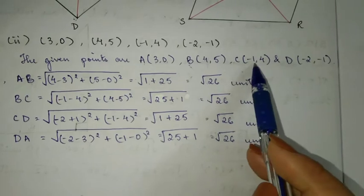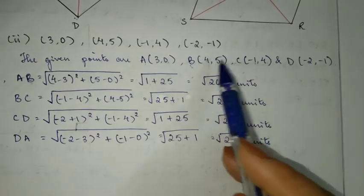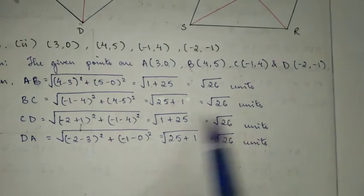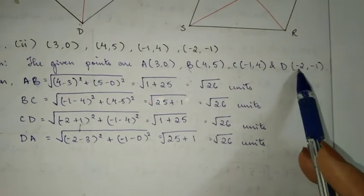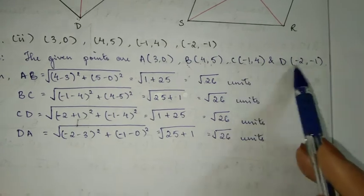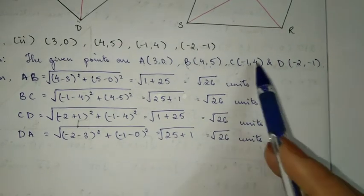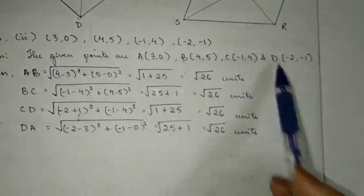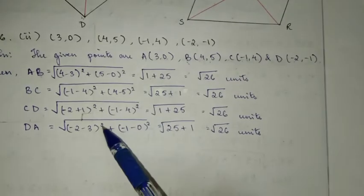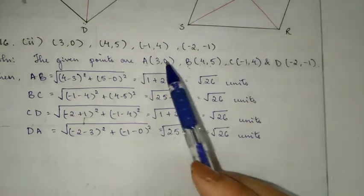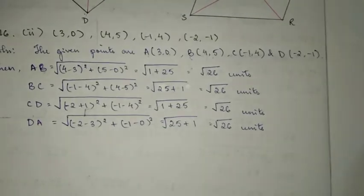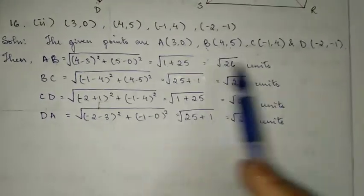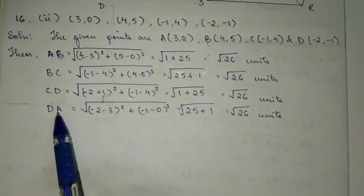Now BC: coordinates (-1,-4), (4,5). And then again we get root 26 units. CD: (-2,-1), (-4,5). Root 26 units. If you want, you can pause over here and copy it down. DA also equals root 26 units.